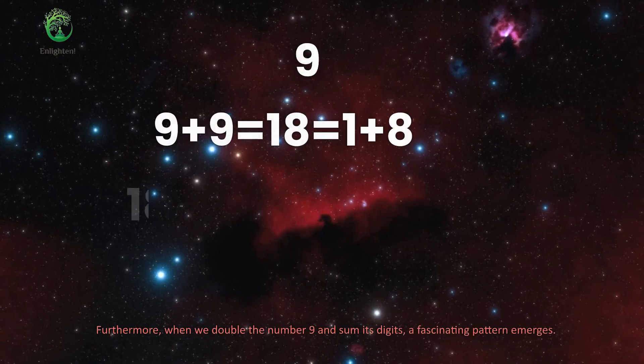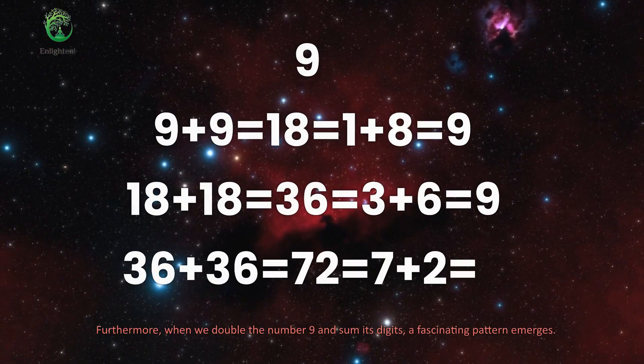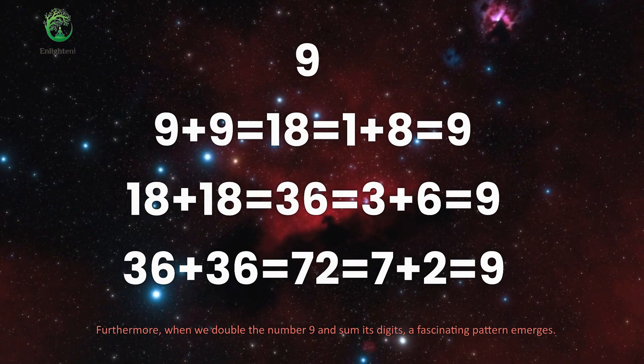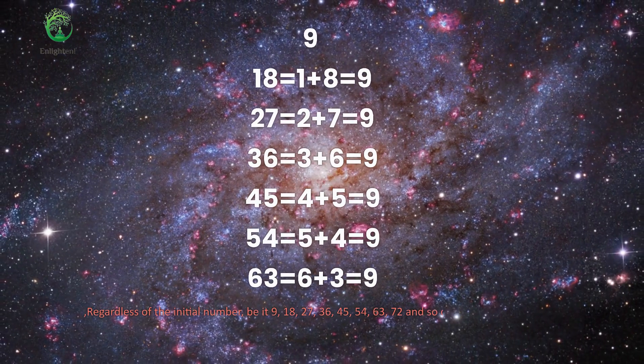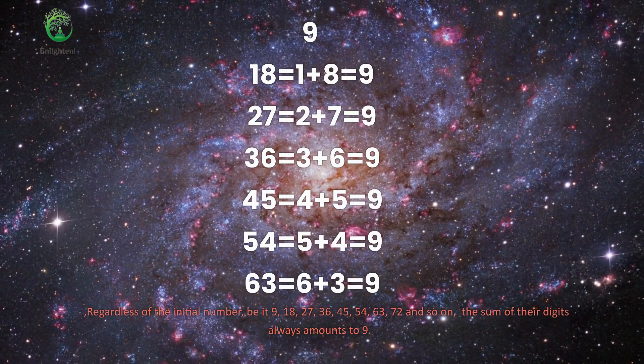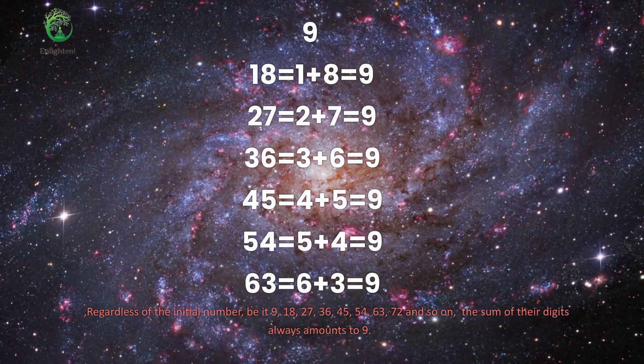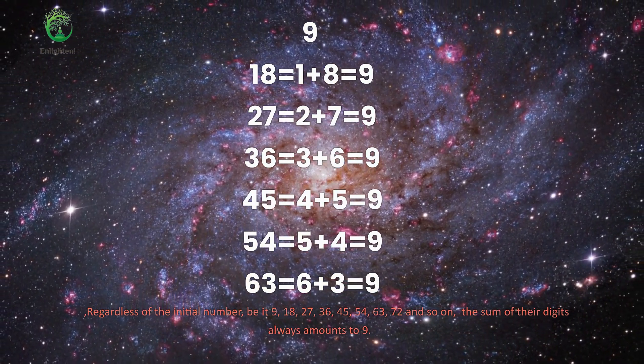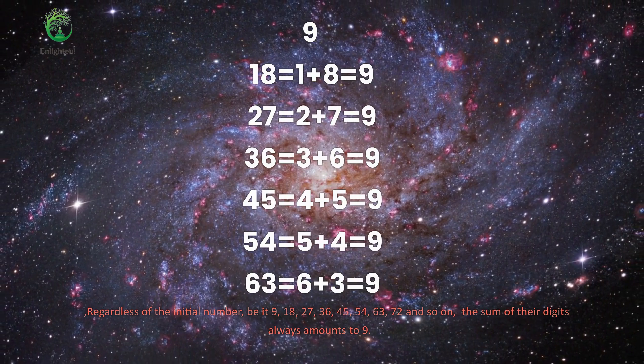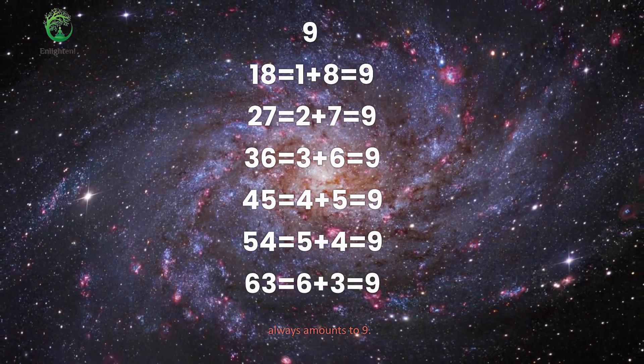Furthermore, when we double the number 9 and sum its digits, a fascinating pattern emerges. Regardless of the initial number, be it 9, 18, 27, 36, 45, 54, 63, 72 and so on, the sum of their digits always amounts to 9.